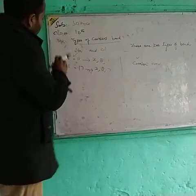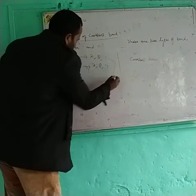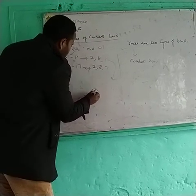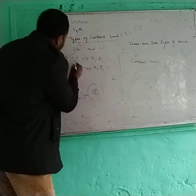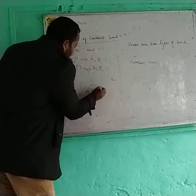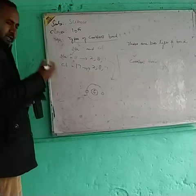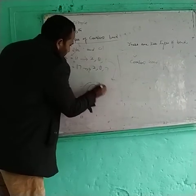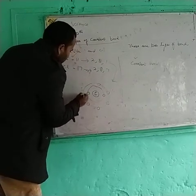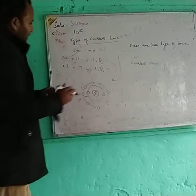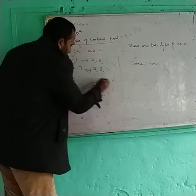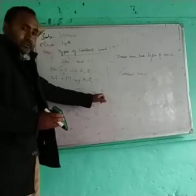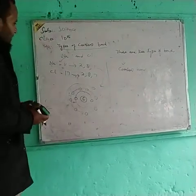Looking at sodium: there is a nucleus with protons and neutrons. The first shell has two electrons — it is complete and doesn't need any electrons. The second shell contains eight electrons and is also complete. The third shell has only one electron. This means sodium would need seven electrons to complete its outer shell, which is not feasible.